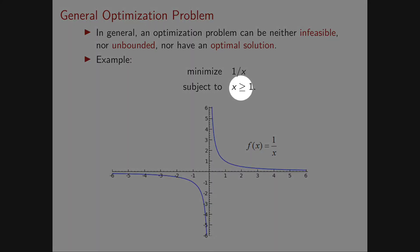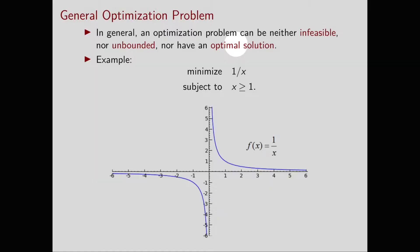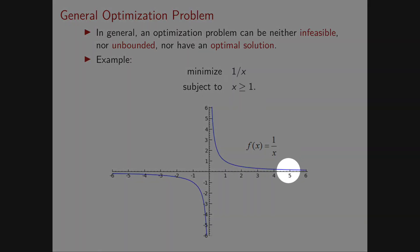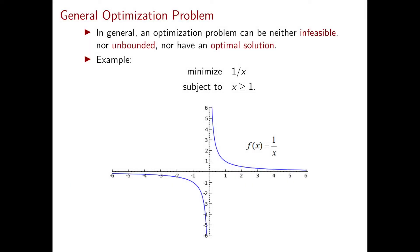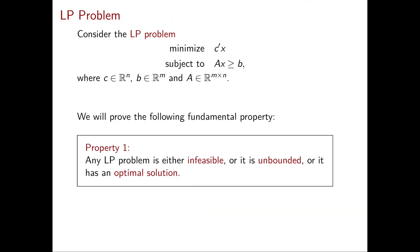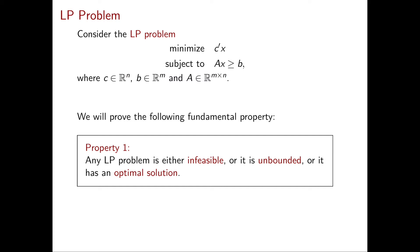Let's check this optimization problem doesn't have any of the three outcomes. Of course it's feasible, since the feasible region is x ≥ 1. It is not unbounded because the objective function cannot become arbitrarily small — there's no feasible point with objective value smaller than 0. And it doesn't have an optimal solution because for any point you pick greater than or equal to 1, there's always a better one. However, this problem is not a linear programming problem because the objective function is nonlinear.